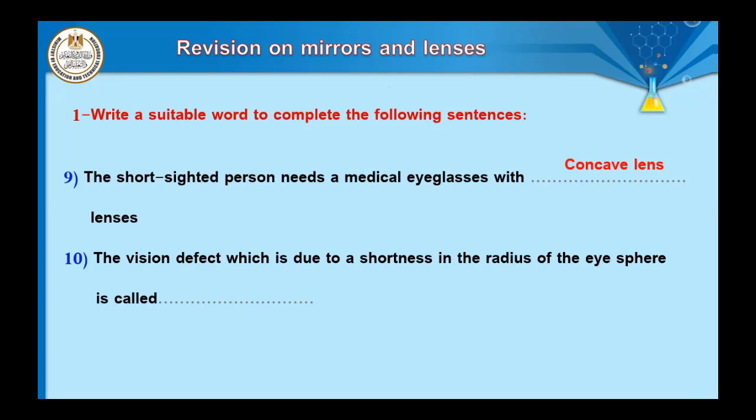There are three reasons for long-sightedness: decreasing of eye pool diameter, decreasing of convexity of the eye lens, and increasing in the focal length. Short-sightedness also has three reasons: increasing the diameter of the eye pool, increasing the convexity of the eye lens, and decreasing in the focal length.